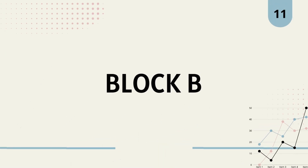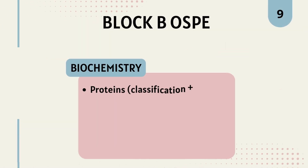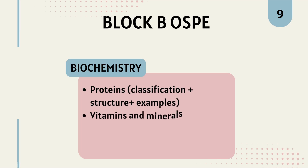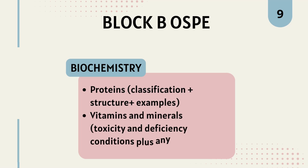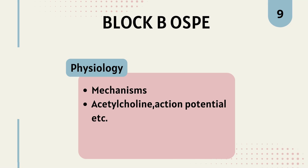For Block B, here is its distribution given by KMU — you can have a look at it. For biochemistry, you should know proteins, their classification, structure, and examples. For vitamins and minerals chapters, their toxicity and deficiency conditions are important. Also know any duplicate names, for example vitamin C is also known as ascorbic acid.